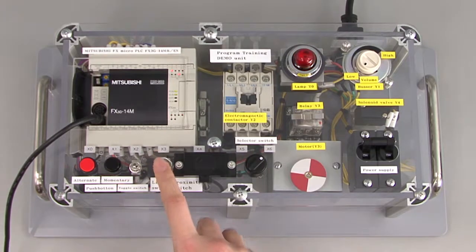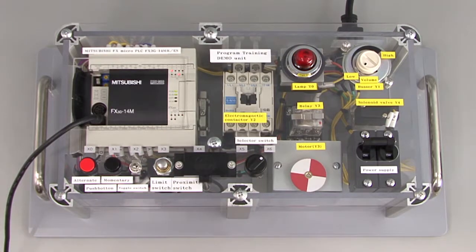Next, turn on the limit switch x3, which is the exit sensor. The red lamp will turn off, and the motor will stop.